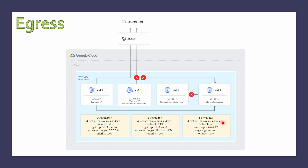The third firewall rule has direction ingress, action allow, protocols all, source 0.0.0.0/0, target tag 'server', and priority 1000 — this is applied to VM4. Now for VM1, which has no specified firewall rule, the implied allow egress rule lets it send traffic to any destination.